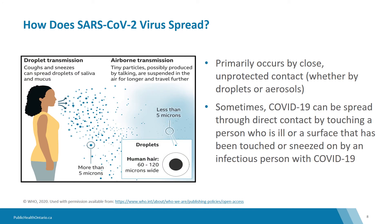SARS-CoV-2 is a respiratory virus, so transmission similarly occurs on a spectrum. It is primarily transmitted by close, unprotected contact with droplets which spread at close range. These droplets can vary in size from large droplets that fall to the ground around the infected person within seconds or minutes, to smaller droplets — sometimes called aerosols. The role of both droplets and aerosols is suggested to be most important for transmission at close range.